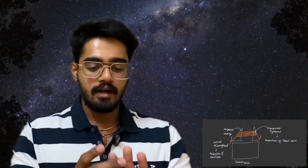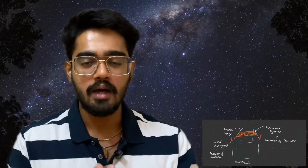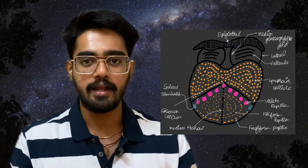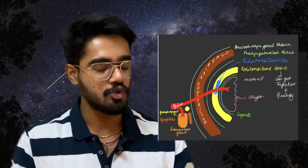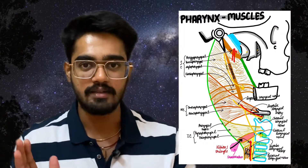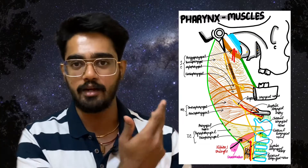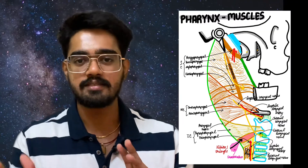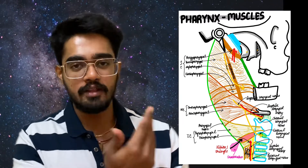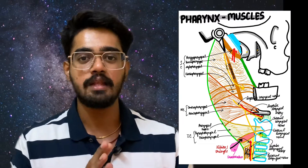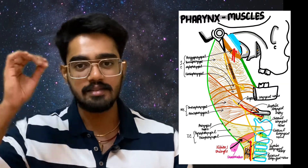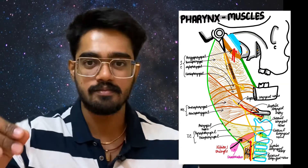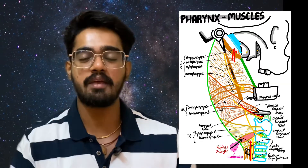Diagrams are the key to distinction. You should be drawing solid, well-sized diagrams — they will look just perfect. This is like the diagram I drew. If the examiner sees a diagram like that, they will be forced to give you a distinction. They will have no choice — they will say, this guy knows his stuff, I am giving him a distinction.